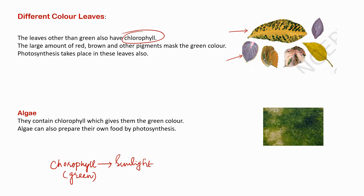The large amount of red, brown, and other pigments mask the green color. So these leaves do have chlorophyll, but the amount of other color pigments is very high, causing the green color pigment to be masked. That's why we are not able to see it — otherwise chlorophyll is present in these leaves, and photosynthesis takes place in them as well.